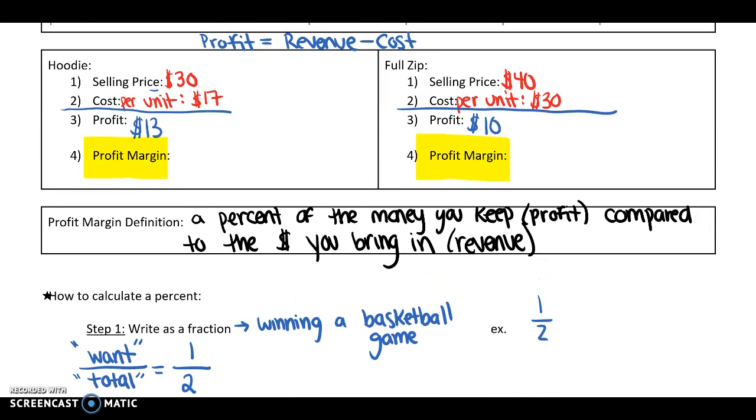So if I'm calculating profit margin, I'm going to start by writing it as a fraction as I did below. So remember a fraction is what you quote unquote want over the total. And a profit margin again is a percent or a ratio of the money you get to keep compared to the money you bring in. So what we want is the money we're keeping. Money, I'm even going to write this down, money you keep. And the total is how much money you bring in. Which we know better words for these, so I'm even going to write that one more time. Money you keep is called your profit. And money you bring in is called your revenue.